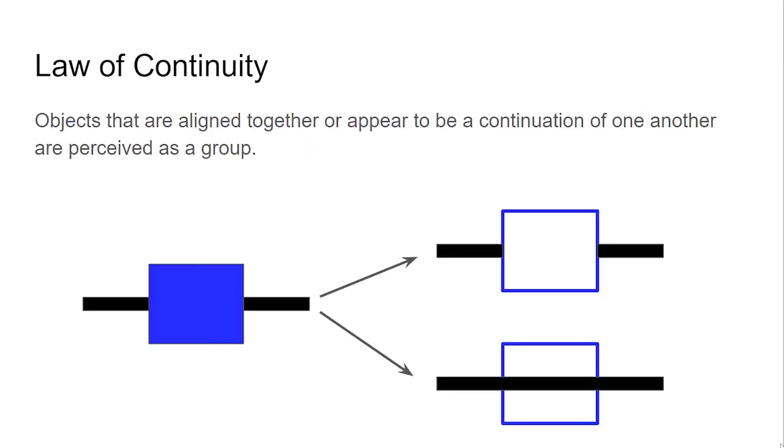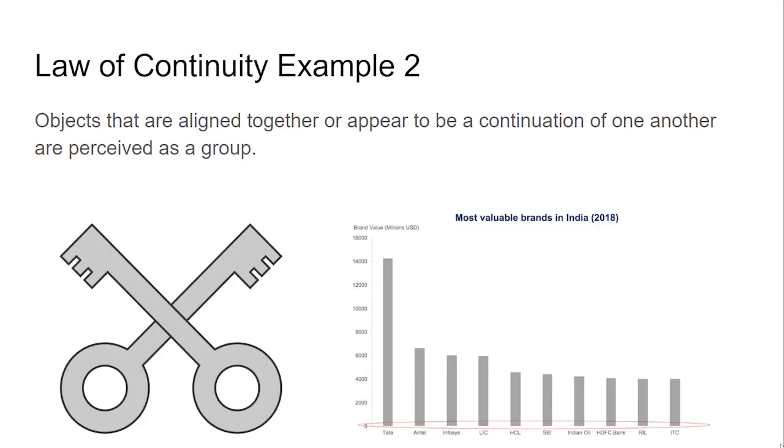With the law of continuity, objects that are aligned together or appear to be a continuation of one another are perceived as a group. Bar chart lines, for example, are considered a group when aligned next to one another.